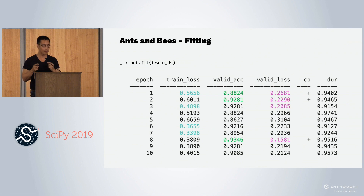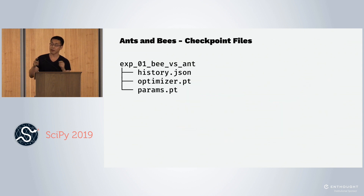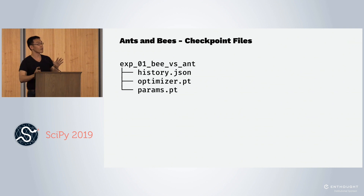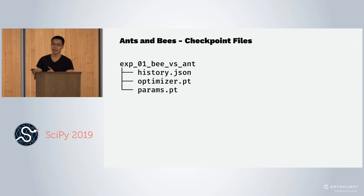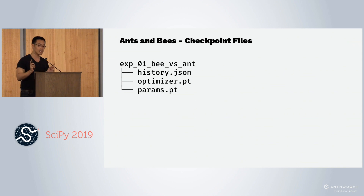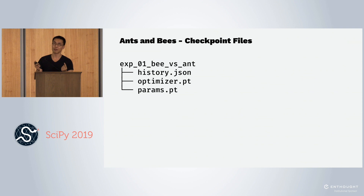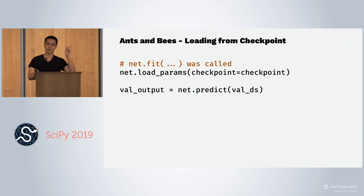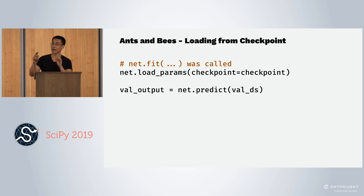On a side note for checkpoints, if you look at the folder it creates, it saves three things by default: the history as a JSON file, the optimizer state, and the weights of your neural network. Because the neural network stopped at epoch 10, we need to load the neural network from epoch 8, since that was the best one seen. To do that, we call load_params with the checkpoint. Now we can call predict, and this gives you predictions on the validation set with the best neural net.